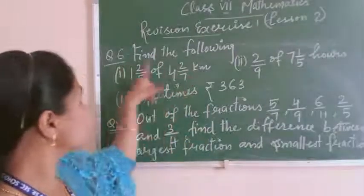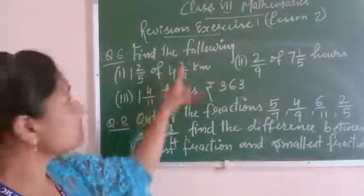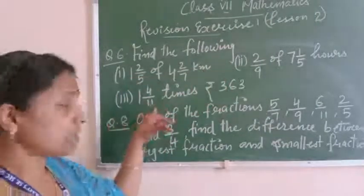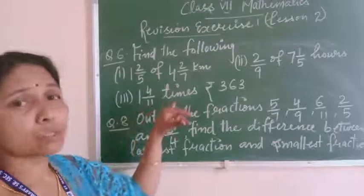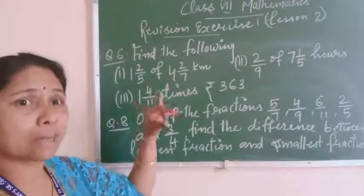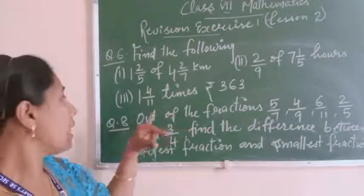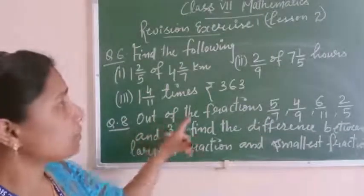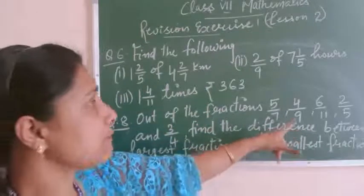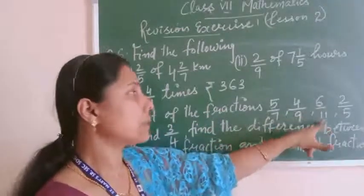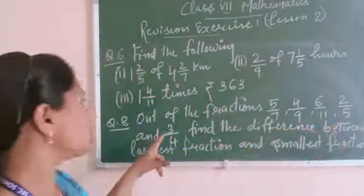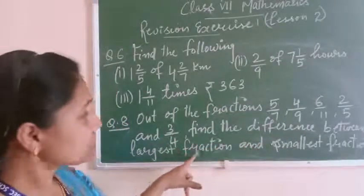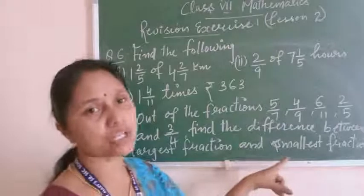I have written it here. Question number 6: find the following. In that, 3 sub-questions are there — 1, 2, and 3. And question number 8 is written here. In that question, out of the fractions 5/7, 4/9, 6/11, 2/5, and 3/4, find the difference between the largest fraction and the smallest fraction.